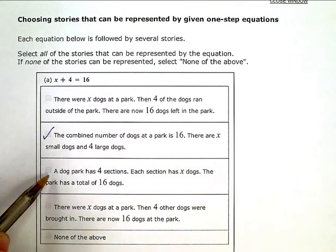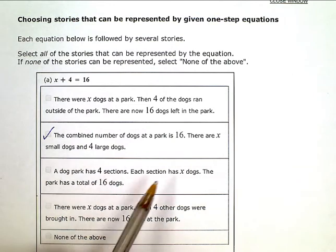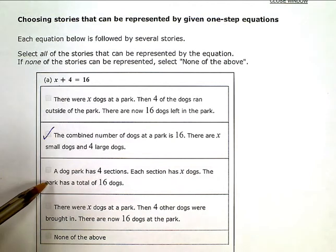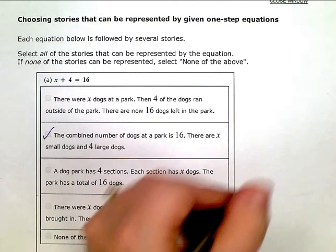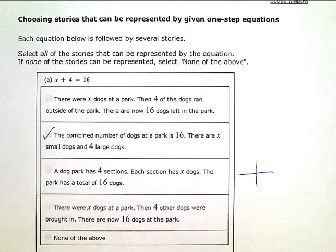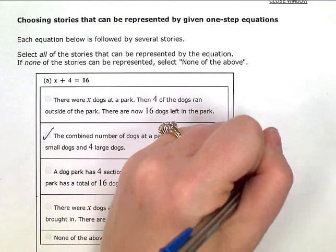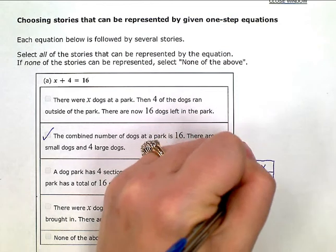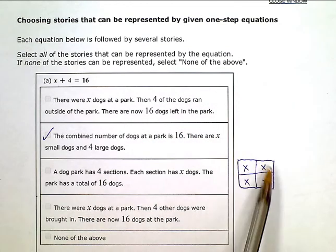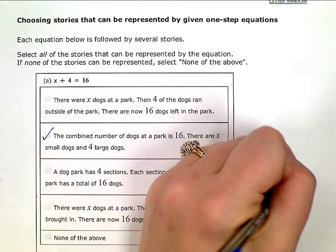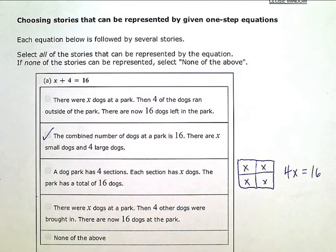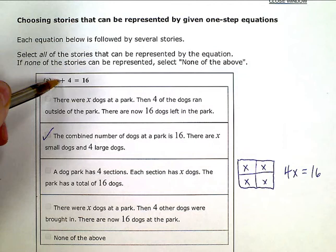A dog park has 4 sections. Each section has x dogs. The park has a total of 16 dogs. Now this isn't an add situation. It's a multiply situation. Because if you think about 4 sections in a park, I'm just going to draw a little quad here. Here's the outside edge of my park. And I had x dogs in each section. That would be 4 x's, right? 4x equals the 16 total dogs. So this one's out because it's multiply, not an add situation.